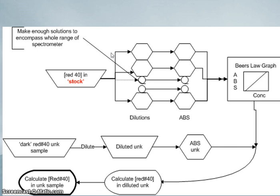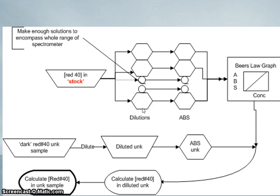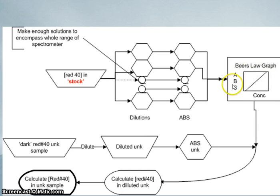Here's our flow chart for the experiment. We are given a certain concentration of Red Number 40 — a large bottle in the lab of a known, very dark concentration. We dilute it using that equation into 10 milliliter volumetric flasks, making a series of solutions of different concentrations. For each diluted solution, we calculate its concentration using the dilution equation and directly measure the absorbance, giving us data points to make our Beer's Law graph of concentration versus absorbance. The equation of that line gives us the mathematical relationship between absorbance and concentration.